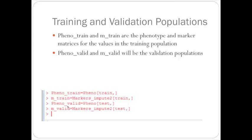while pheno_valid and m_valid are the matrices for the validation population. This just goes through and selects the row numbers that were sampled before for the training population and the test population.